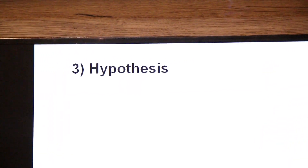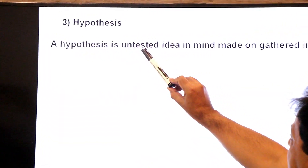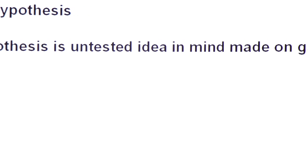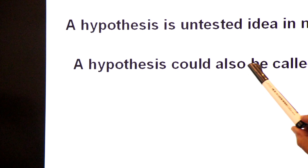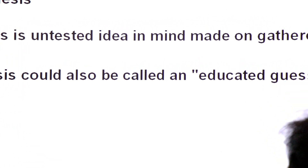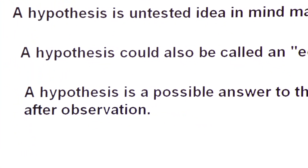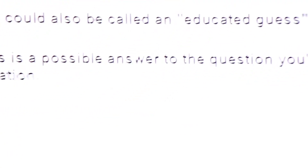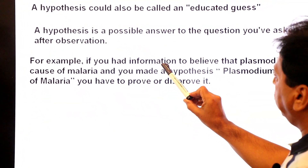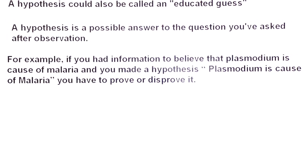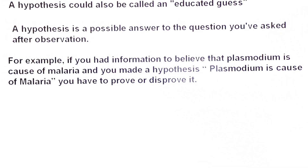Now we move to the third step: hypothesis. A hypothesis is an untested idea in mind, made on gathered information. A hypothesis could be called an educated guess — it is a possible answer to the question you have asked after observation. For example, if you had information to believe that plasmodium is the cause of malaria, you would form the hypothesis: 'Plasmodium is the cause of malaria.'